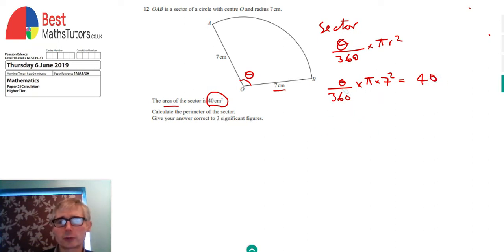We need to rearrange this equation to find the angle. 360 is dividing on this side, so if we multiply both sides of the equation by 360 it'll cancel on the left hand side. We'll end up with theta times by pi and 7 squared which is 49 is equal to 40 times 360.